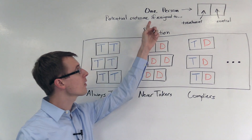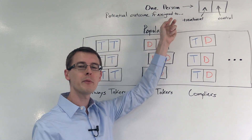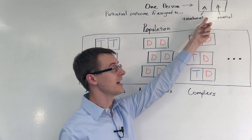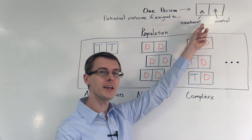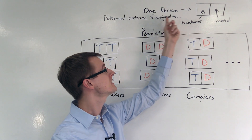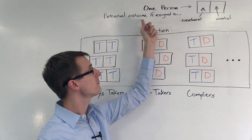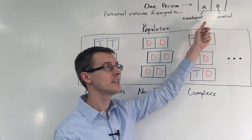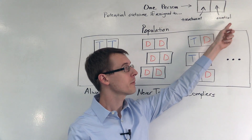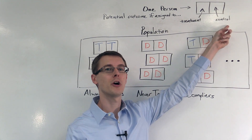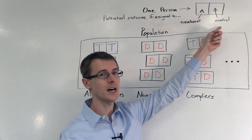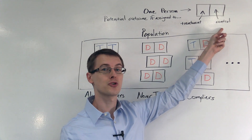Now each person in the population, I'm going to describe by a box that has two parts. In the left-hand side of the box, I show their potential outcome if they're assigned to the treatment group. On the right-hand side of the box, I show their potential outcome if they're assigned to the control group.